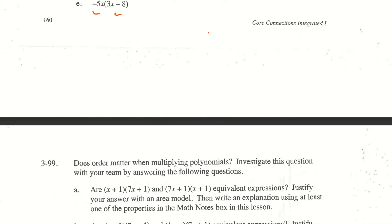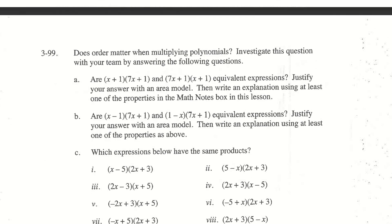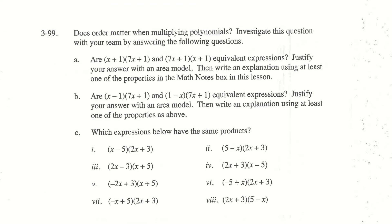Let's move on to question 99. This is an important question. It's important that we understand this. What we're essentially asking here is, if I've got two things that I'm multiplying together, if I have the x plus 1 first or the x plus 1 second, do I get the same answer? I want you to justify your answer using an area model.